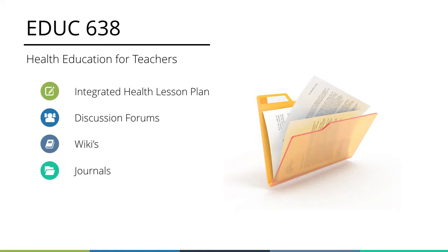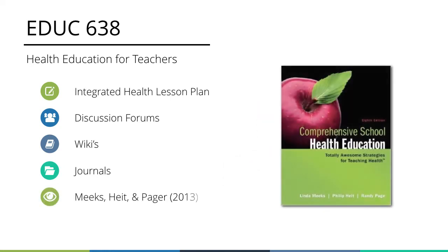The required textbook for the course is the Meeks, Heit, and Page text. While all the course information has been developed using the 8th edition, if you happen to have the 7th edition, you'll also be fine. This is a fairly large textbook, but most of the second half is actually resources and references, so don't be intimidated by the size. Chapters 1 and 2 have been scanned and posted into Moodle in case you haven't obtained your textbook yet, but be sure you obtain your text as soon as possible, as other chapters will not be provided.